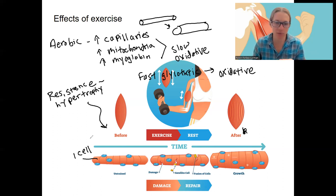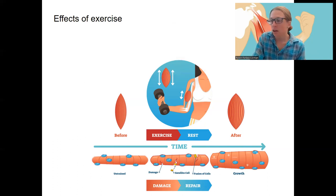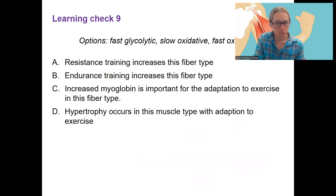And so the other thing then is a high fast glycolytic fiber ratio compared to slow oxidative. And again, that's all dynamic as you exercise more or less and do different types of exercise. Learning check for you here.